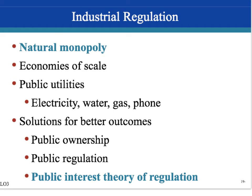Some solutions include the government owning the monopoly — for example, the postal service is a publicly owned near-monopoly — or regulating private natural monopolies by setting rates at a fair price that also allows the monopolist a normal profit. The public interest theory of regulation holds that industrial regulation is needed to prevent monopolists from charging very high monopoly prices, especially in industries where demand is very inelastic, such as electricity, water, and gas, where monopolists could otherwise get away with charging extremely high prices.